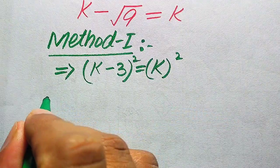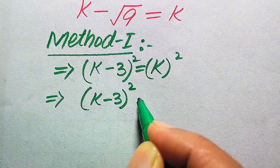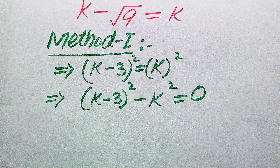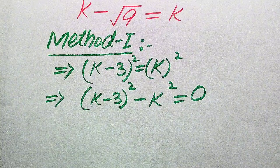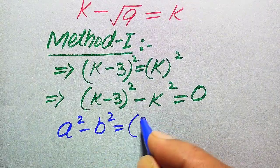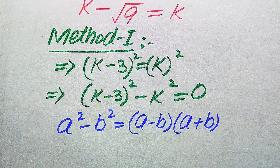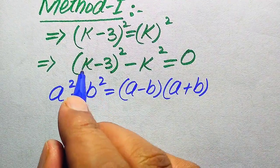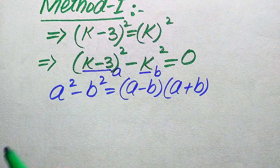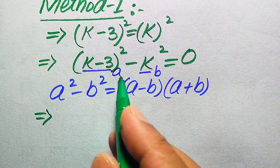First we move k squared from the right-hand side to the left-hand side. It becomes k minus 3, whole squared — this positive term becomes negative when moved to the left-hand side — and this whole equation equals zero. Now we apply the algebraic formula: a squared minus b squared equals (a minus b)(a plus b). The base of one term is our a and the base of the other term is our b.